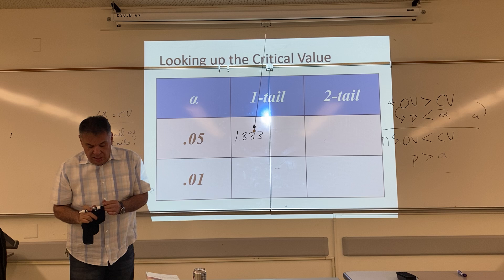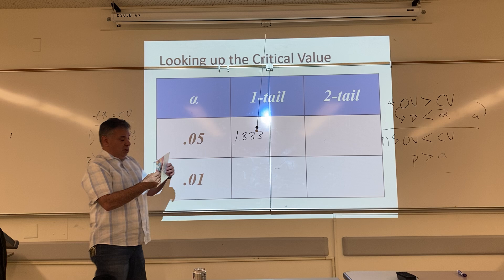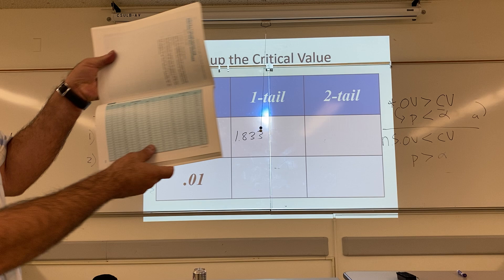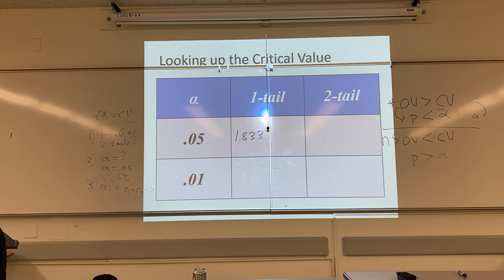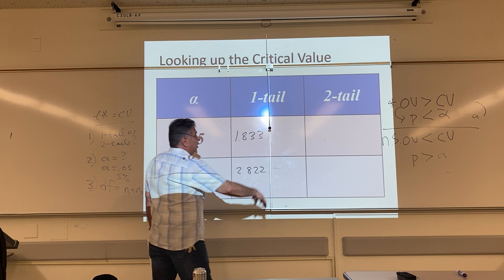According to the textbook, if I make alpha smaller — making it 1% — with one-tailed and 9 degrees of freedom, the answer is 2.822.